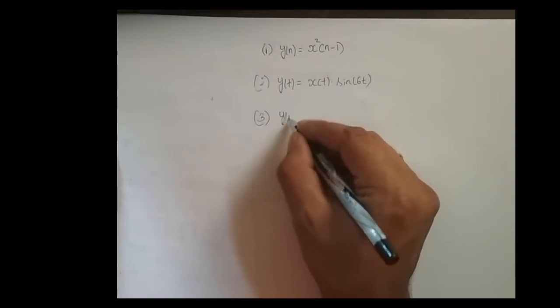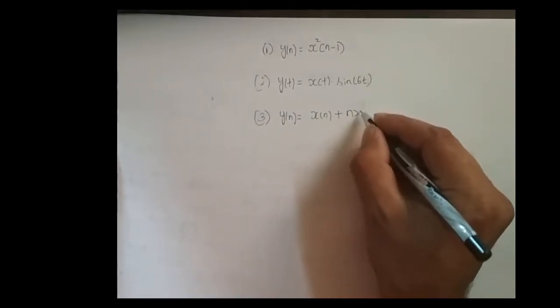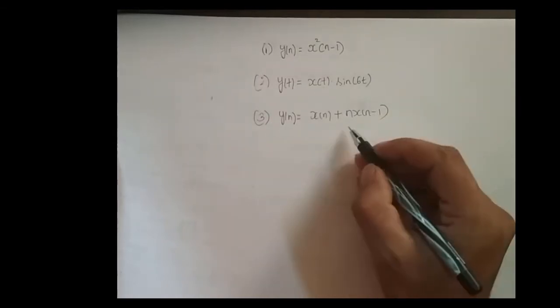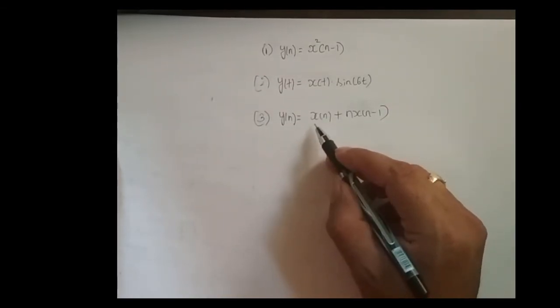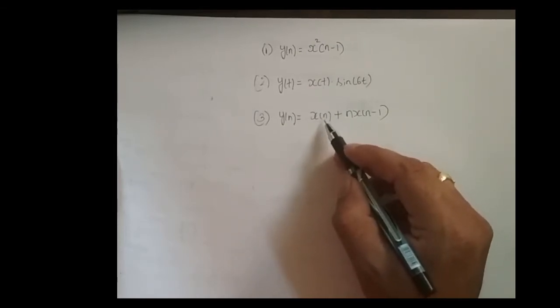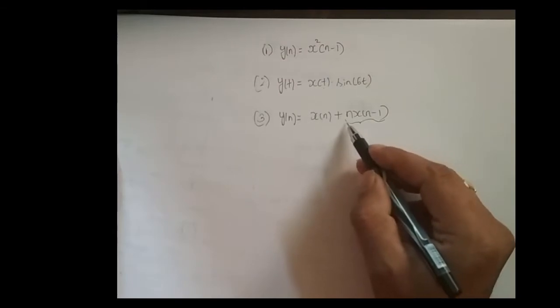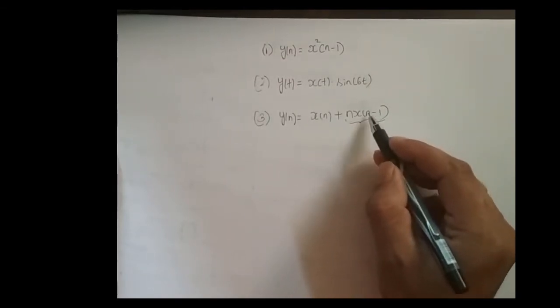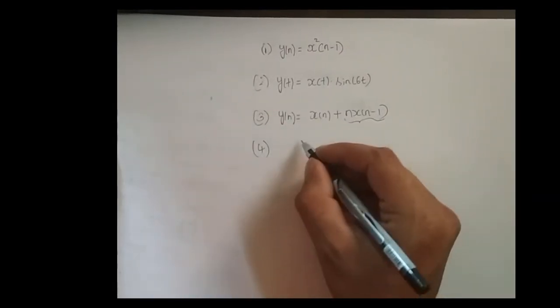And the third one: y(t) = x(n) + nx(n-1). Here, if you feed x(n) to the system, one more signal is getting added and what is that signal? n times x(n-1). The signal shifted right one time and for that, n is getting multiplied.